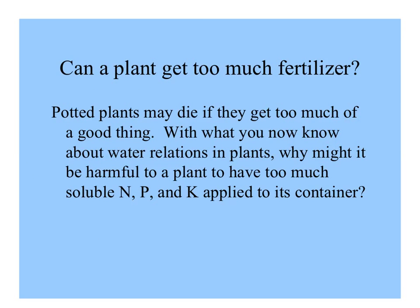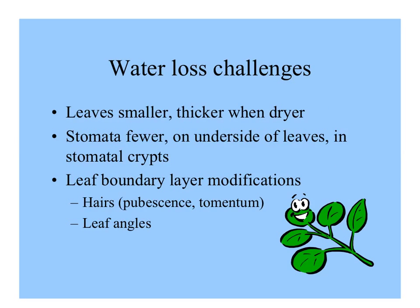Sometimes plant lovers can give their plants too much love — adding so much fertilizer that it harms the plant. With what you now know about water relations, think about why too much soluble minerals, nitrogen, phosphorus, and potassium applied to a plant's container could be harmful. Plants of dry places usually have smaller, thicker leaves, fewer stomata — which may be in crypts under the leaves — and boundary layer modifications like hairy leaves or leaves held at angles to minimize solar radiation.